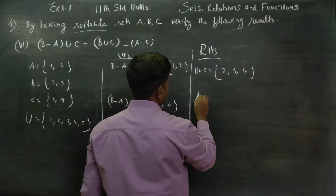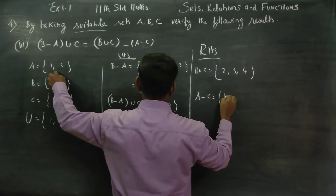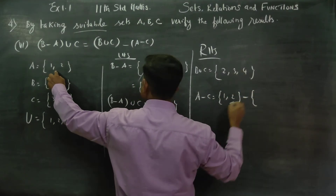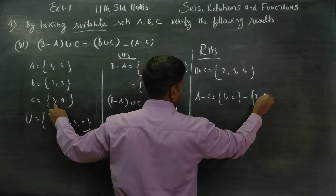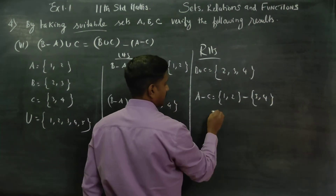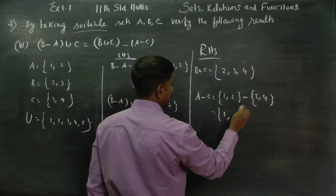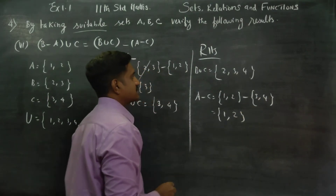Then A minus C. My A is {1, 2} minus C, which is {3, 4}. Element 1 is not in C, so 1 remains. Element 2 is not in C. So A minus C result is {1, 2}.